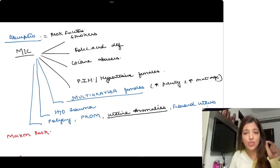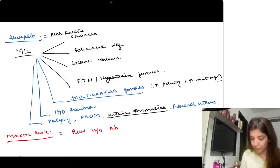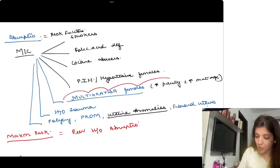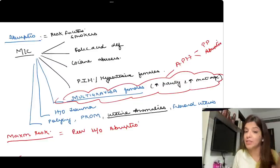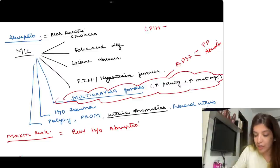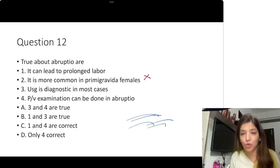You can get a direct question on risk factors for abruptio. Maximum risk of abruptio is seen if there is a previous history of abruptio. Remember: antepartum hemorrhage — whether placenta previa or abruptio — both are more common in multigravida females, whereas PIH is more common in primigravida females. So the second statement 'more common in primigravida' is absolutely incorrect.